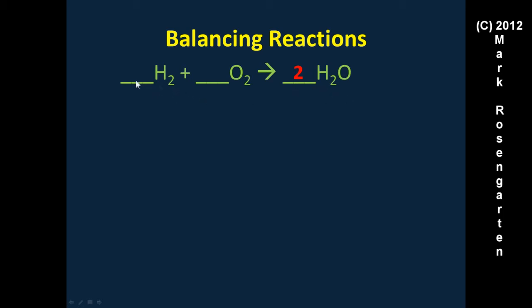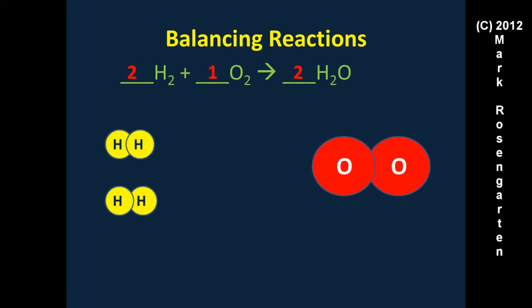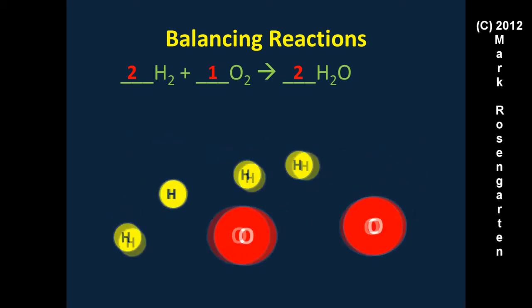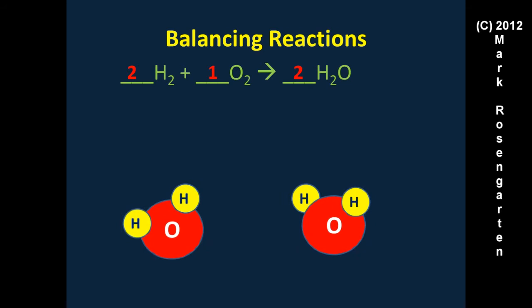Two times two is four, so we put a two in front of H₂ on the left. Now we have four hydrogens on both sides and two oxygens on both sides — completely balanced. Visually, two diatomic hydrogens and one diatomic oxygen react: the bonds break, the atoms rearrange, and two molecules of H₂O are formed.